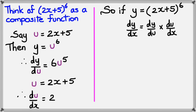Now we've already worked out what dy/du is and what du/dx is. Because dy/du is 6u⁵, as you can see, multiplied by du/dx, which is 2. And this would equal 12u to the power of 5.